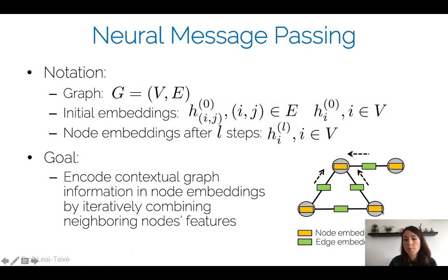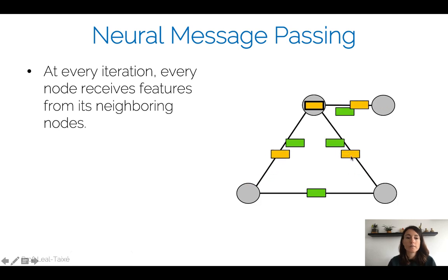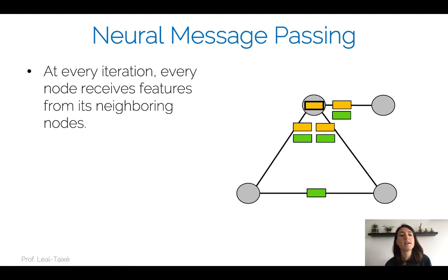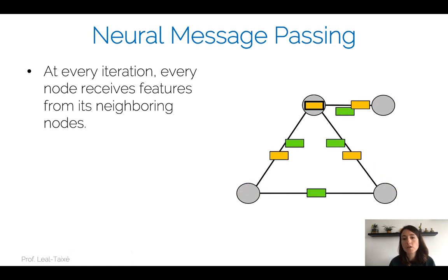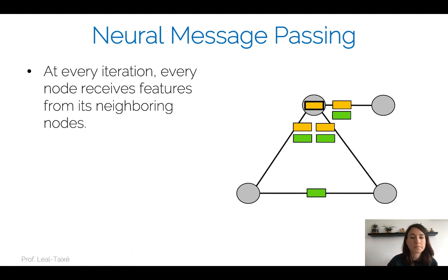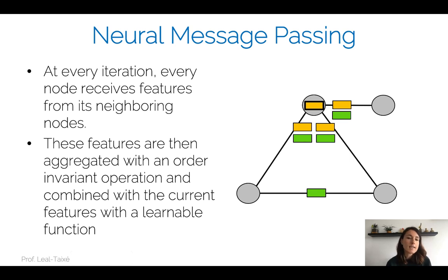H superscript L means the node embedding has been updated L times — there have been L message passing steps that updated the node embeddings with information from neighbors. The idea is to iterate through a series of information passing or neural message passing steps. At every iteration, my node receives features from neighboring nodes through the edges. You can have a varying number of neighbors — a node depicted here has three neighbors, but the node at the bottom has only two.